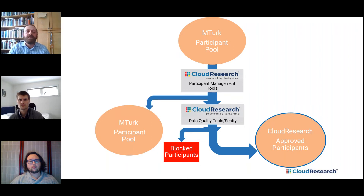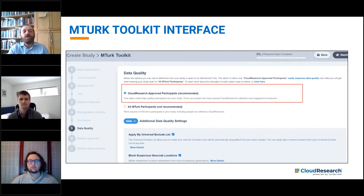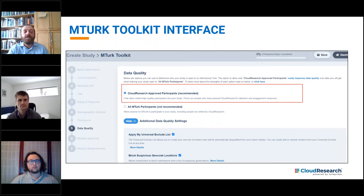I first want to address some practical questions about the Cloud Research approved group. The first question is: how can the approved group be accessed when setting up your study? As you can see on the slide, the approved group is easily accessible on the Cloud Research interface — it is the default setting when setting up a HIT through the Cloud Research platform. I want to mention that this is our new interface and is now available; we just rolled it out in the last couple of weeks. We're very excited about it and think you'll find it a much improved user experience.